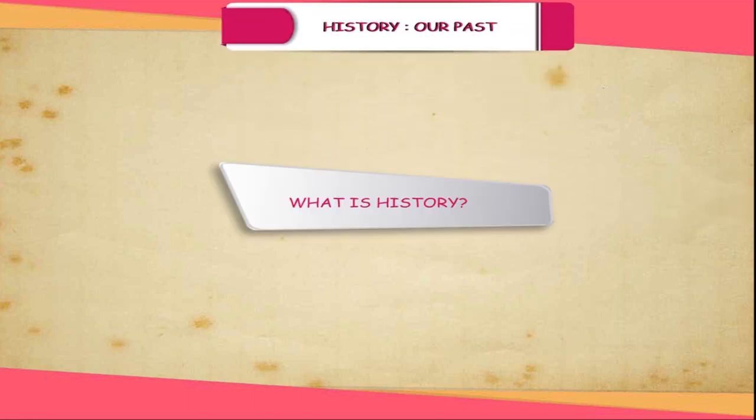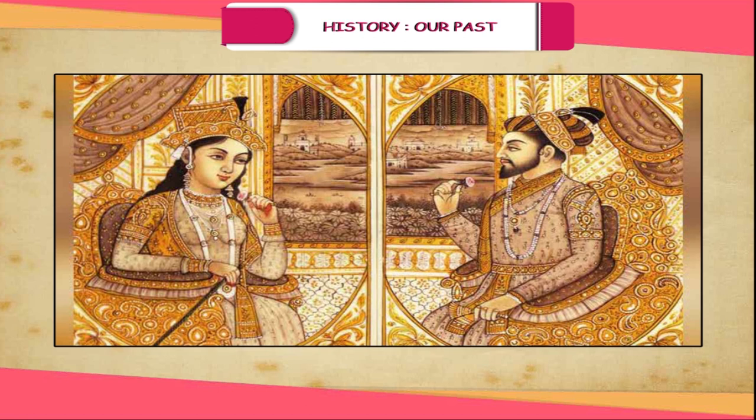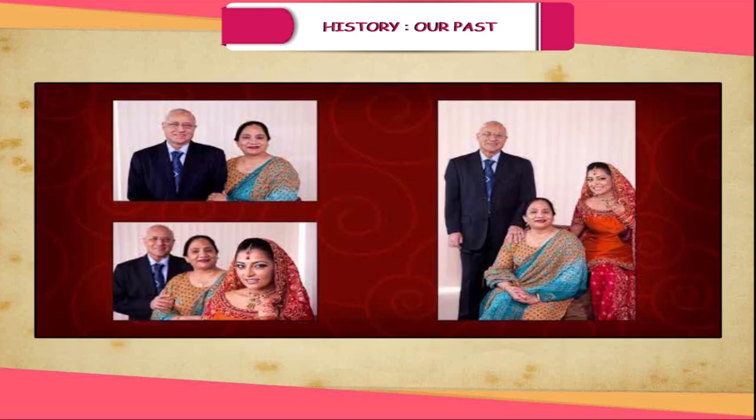History is our past. What is history? History may be defined as a careful, systematic record of past events, such as records of the royal dynasties and the way of life of the common people, arranged in a chronological way. Take the example of your family album.